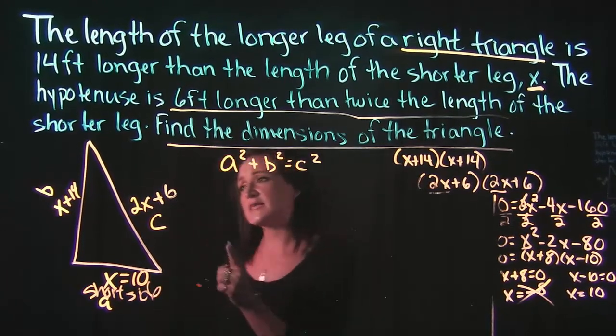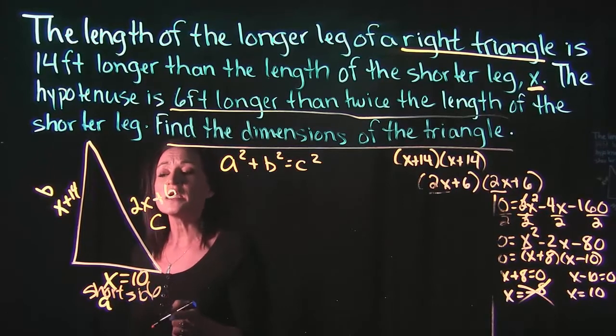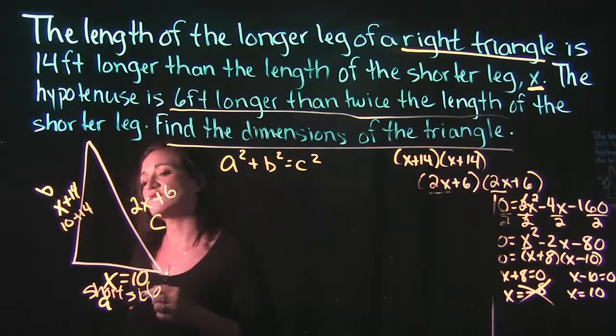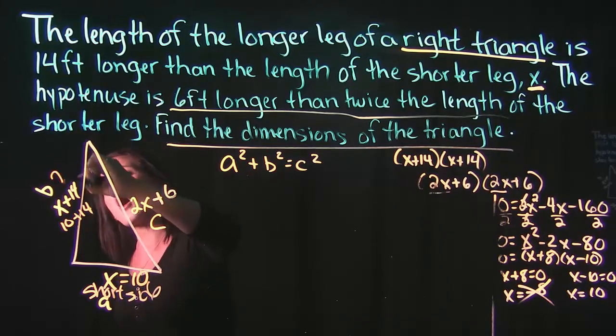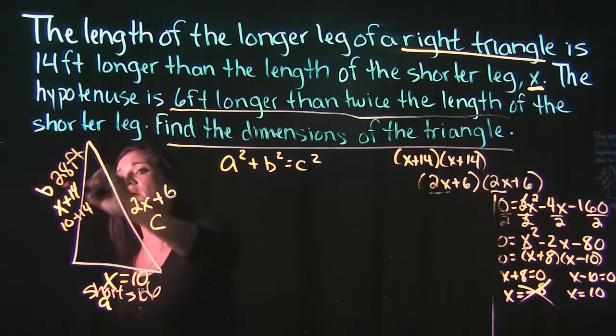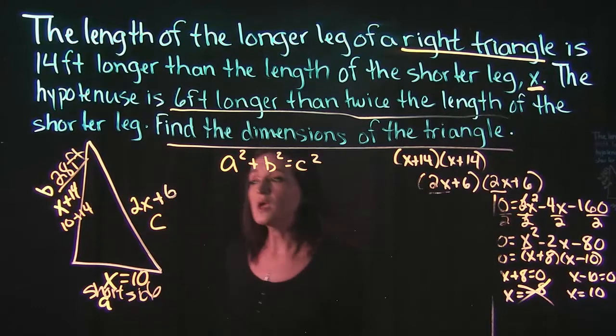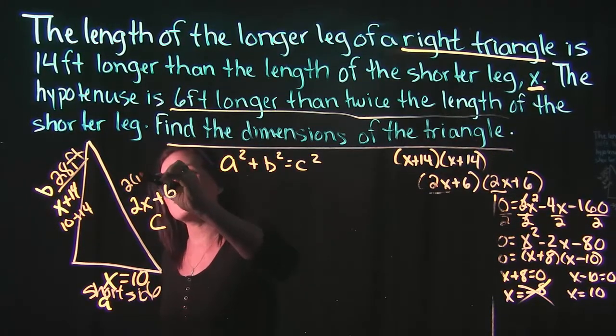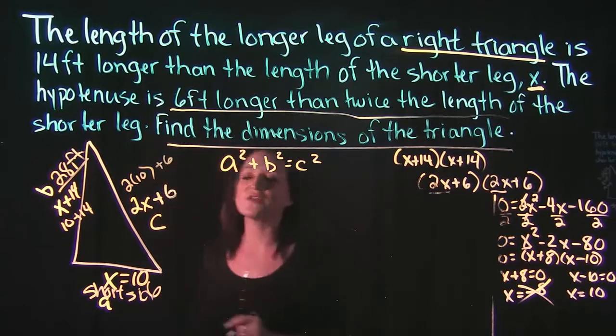Our long side is x plus 14. Now we know that x is 10. So if we do 10 plus 14, that means the long side has to be 28 feet. That means we can do the same thing with our hypotenuse here.